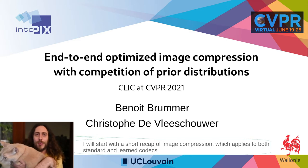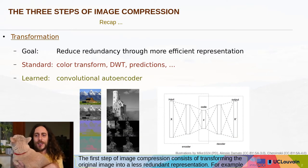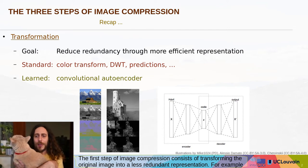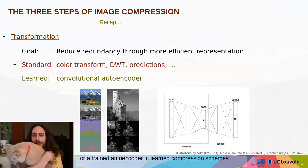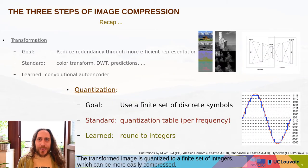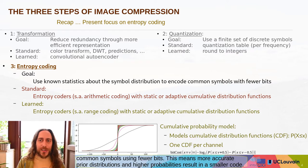I will start with a short recap of image compression which applies to both standard and learned codecs. The first step consists of transforming the original image into a less redundant representation — for example, using a color transform and a discrete wavelet transform in traditional codecs, or a trained autoencoder in learned compression schemes. The transformed image is quantized to a finite set of integers which can be more easily compressed. Finally, an entropy coder encodes the quantized data by using known statistics about the data distribution to encode the most common symbols using fewer bits.